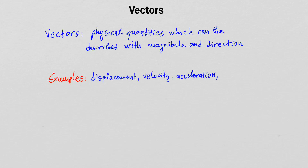Here are more examples of vector quantities: force, momentum, and torque are all vector quantities. Velocity is a clear example — velocity has magnitude, for example 60 miles per hour, but velocity is a vector quantity.